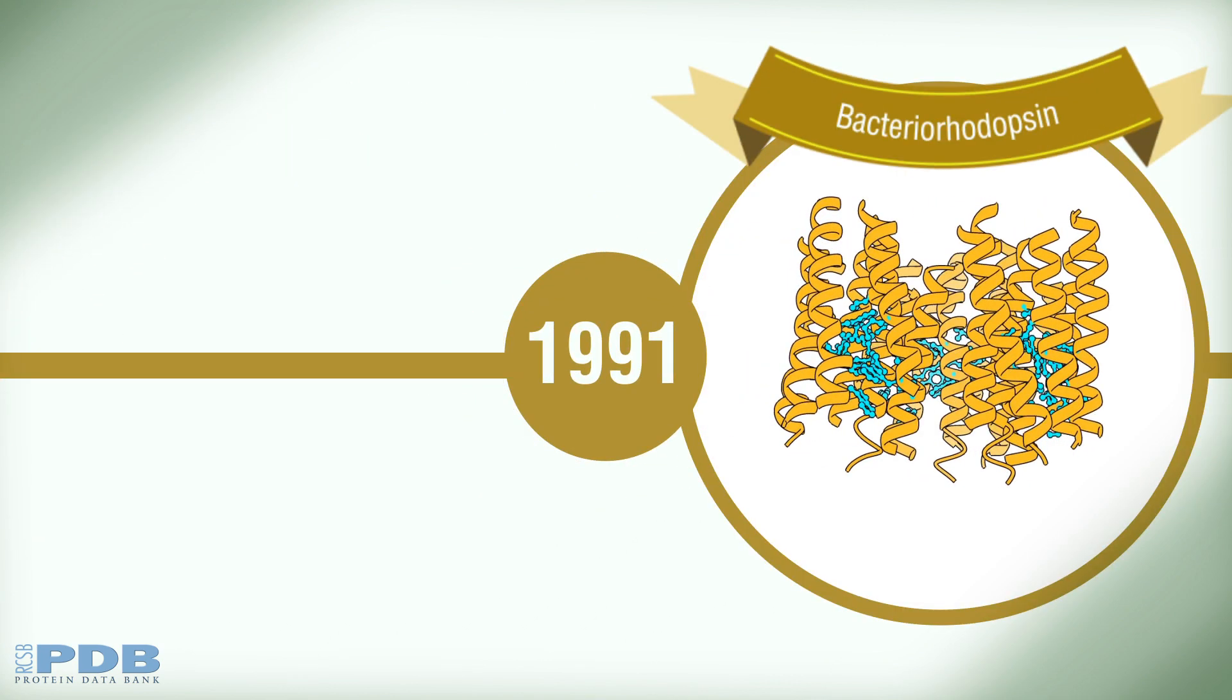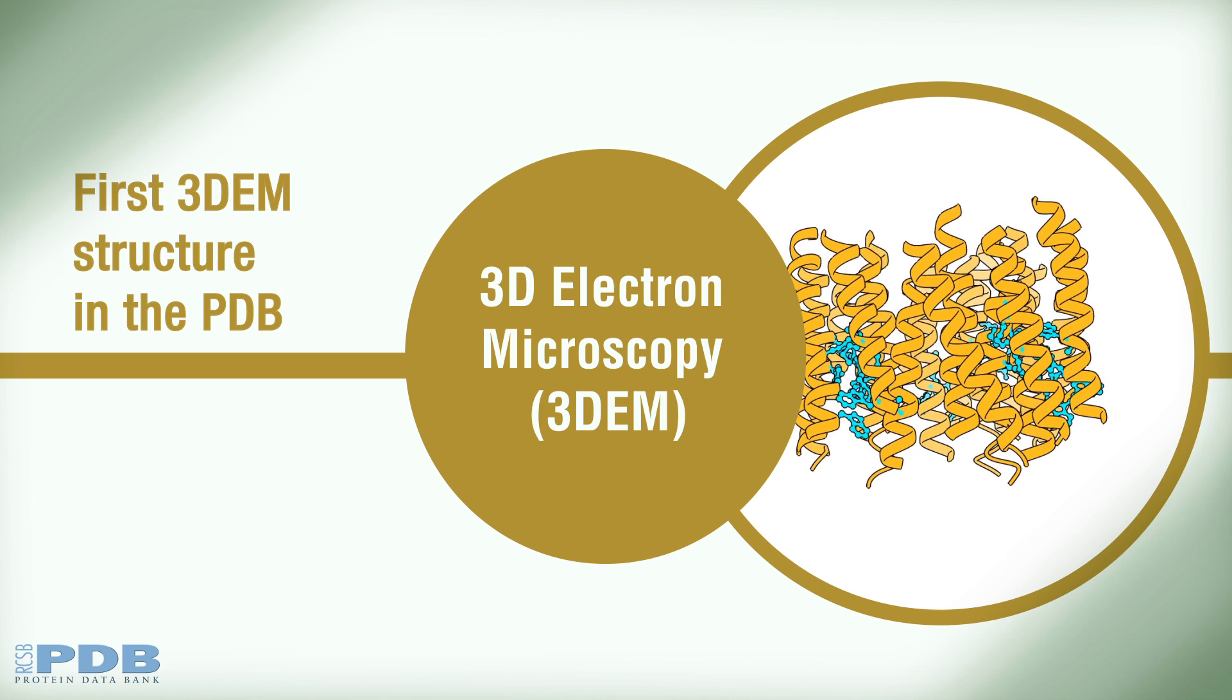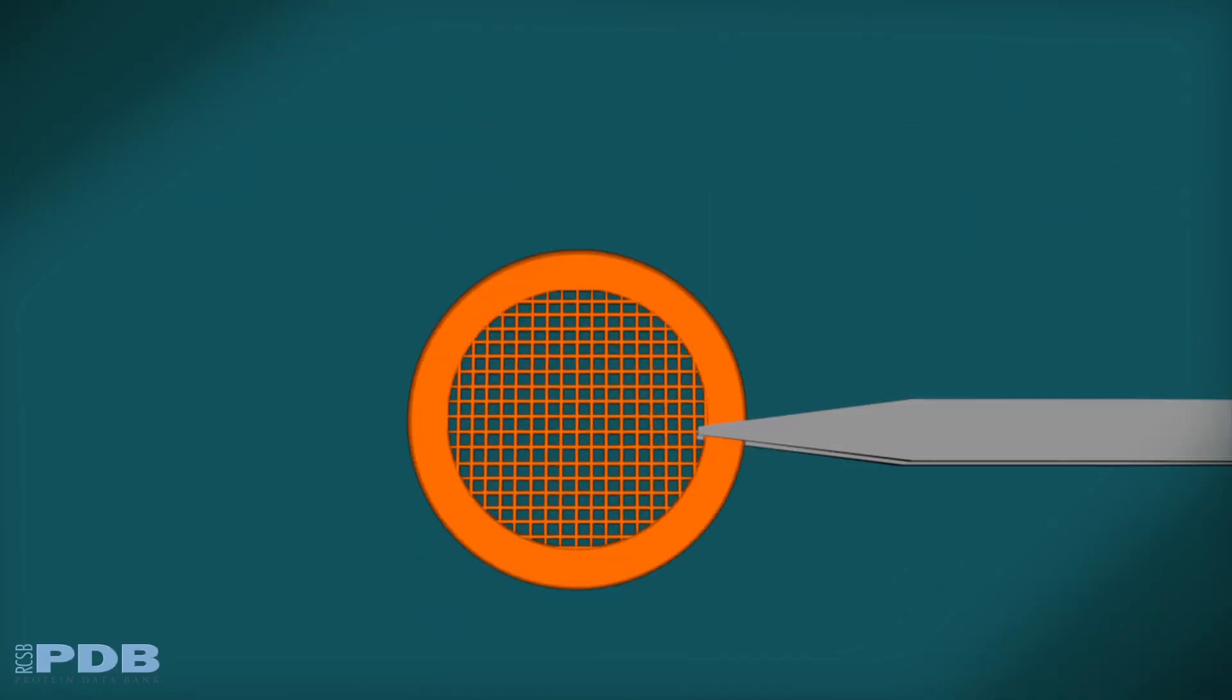In 1991, the first structure determined using 3D electron microscopy, or 3DEM, was released by the PDB.